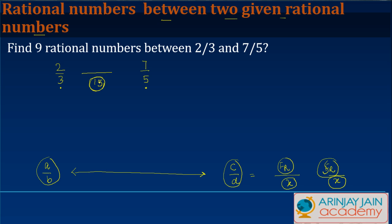So this is the least common multiple. What I will do is I'll convert the first number in such a form that I get 15 as the denominator, and similarly I will convert the second number in such a manner that I get 15 as the denominator.